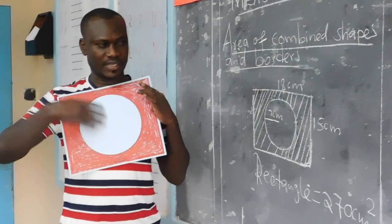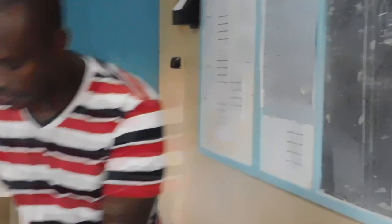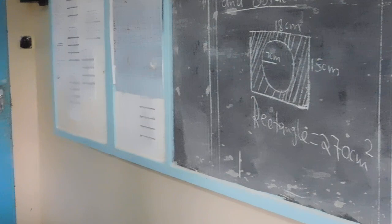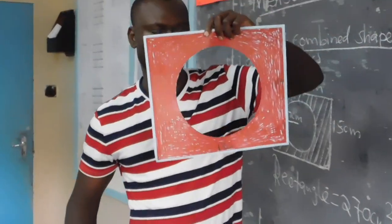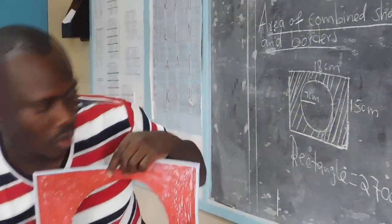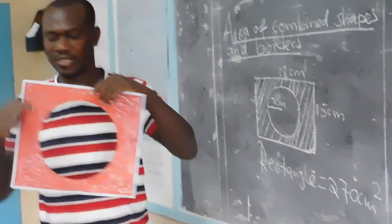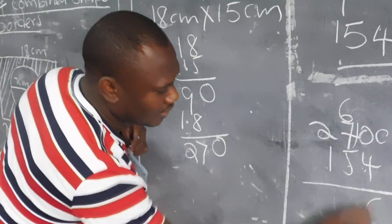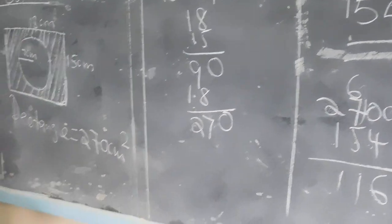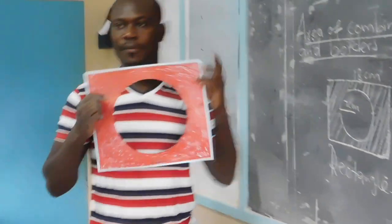So 154 square centimeters is the area of the circle, while 270 is the area of the whole space including the circle. Therefore, if I want to remain with only the shaded part, I remove the circle: 270 minus 154 gives us 116 square centimeters as the area of the shaded part.